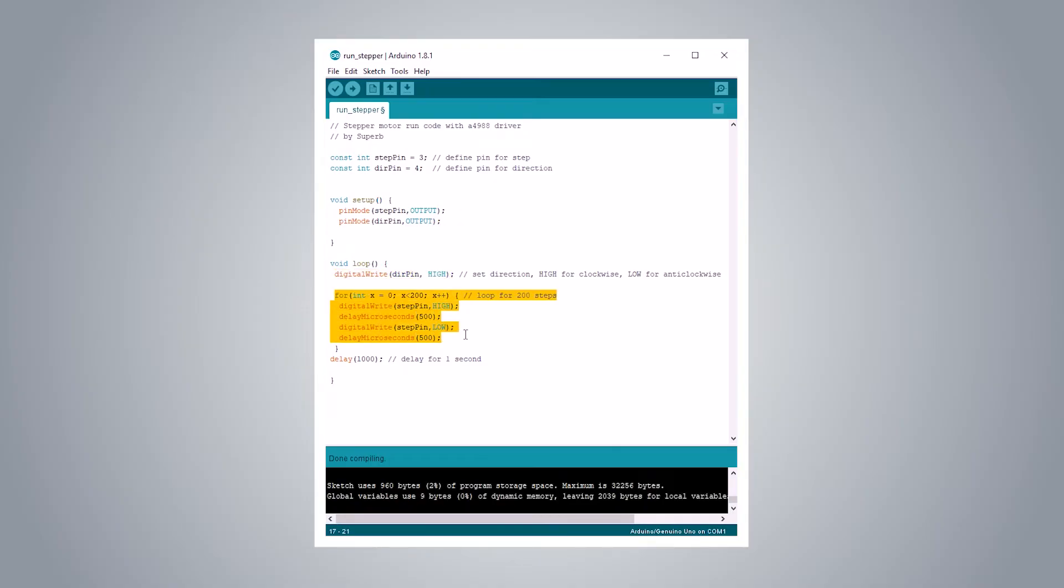The delay in microseconds defines the speed of rotation. The more the delay the lesser the rotation speed. And lastly a delay of 1 second to pause the motor after every rotation. Thus our sample code is complete. So now let's use it on the motor.